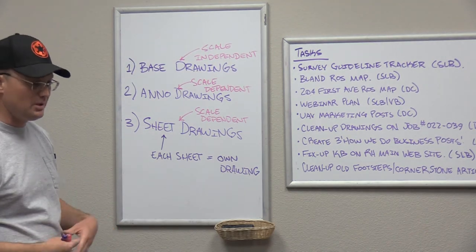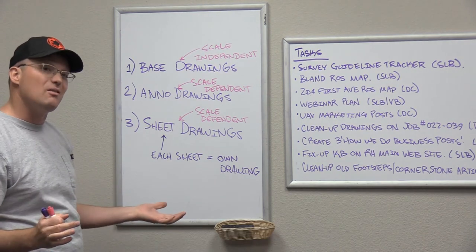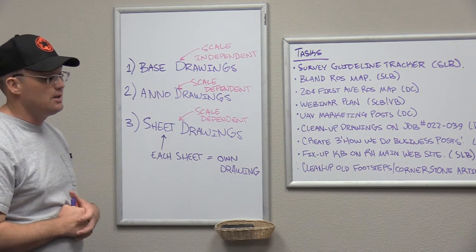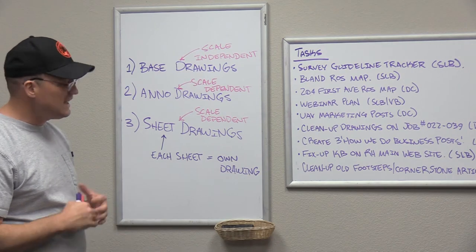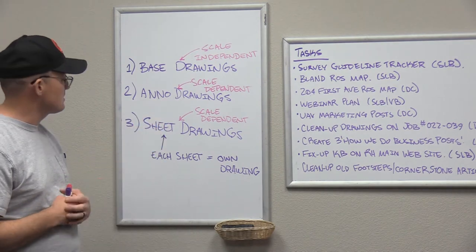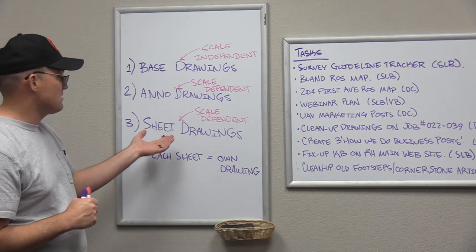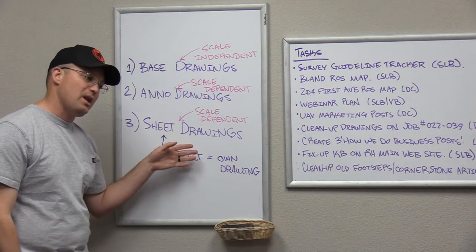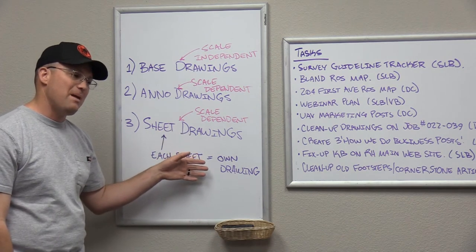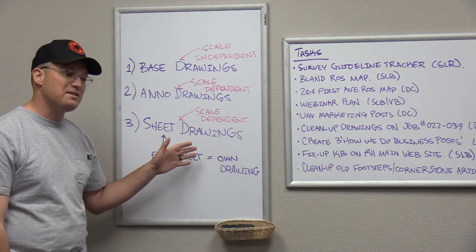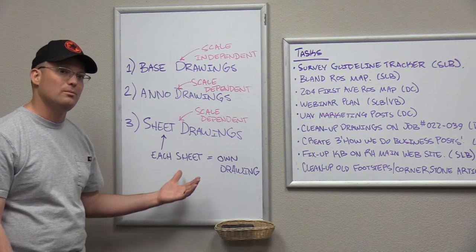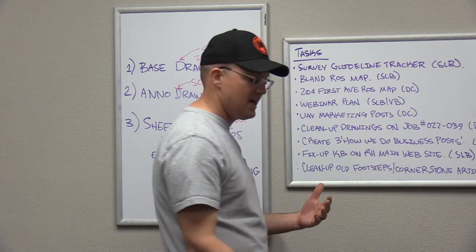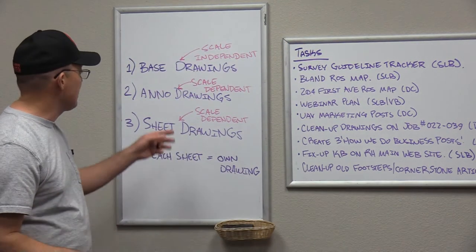Here are the rules we follow at Redefine Horizons: we do not use annotative objects — no annotative text or annotative multi-leaders. I think annotative objects are the root of all evil; they cause a lot of headaches. We also do not do drafting of model space content in paper space. Some surveyors skip the annotation drawing and do all their symbols, hatching, and text labeling in the paper space sheet — we don't do that. The only thing in the viewport on our sheet drawing is the viewport itself. Match lines and other sheet layout elements actually go in the annotation drawing.